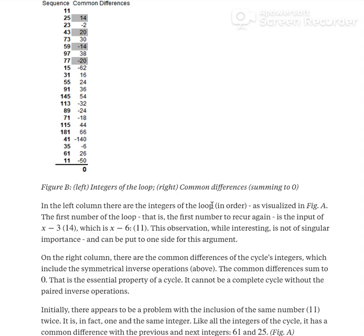Just to repeat, in the left column there are the integers of the loop in order, as visualized in figure A, the wheel. The first number of the loop, that is the first number to recur again, is the input of x-3, which is 14, and x-6, which is 11. So 11 is actually the first input, and then the common difference is 14. This observation is interesting, but it's not of singular importance and can be put to one side for this argument.